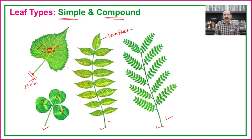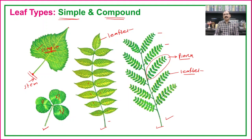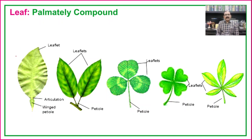In books and descriptions we also see the word 'pinna'. Don't confuse leaflet and pinna: a single segment is known as a leaflet, while the whole part bearing the secondary rachis and the leaflets present on it is known as the pinna.